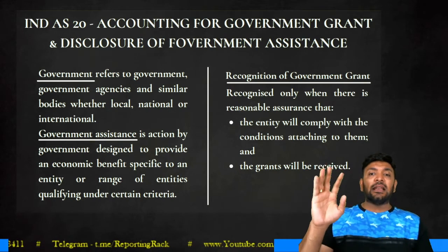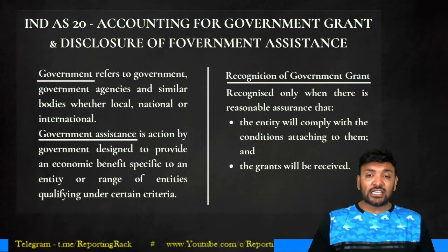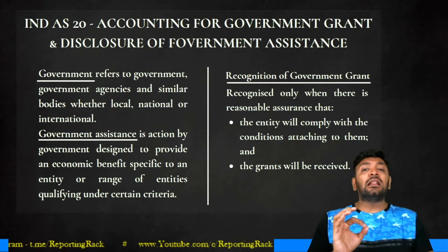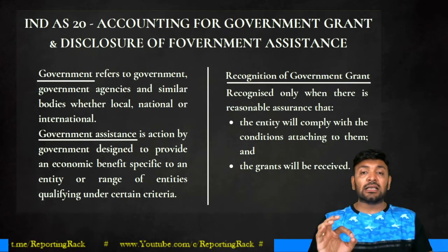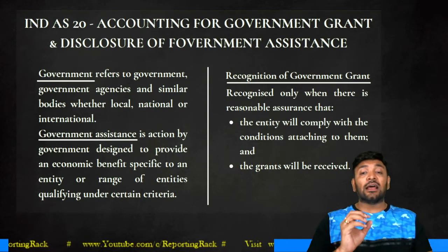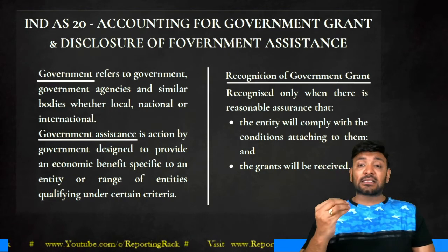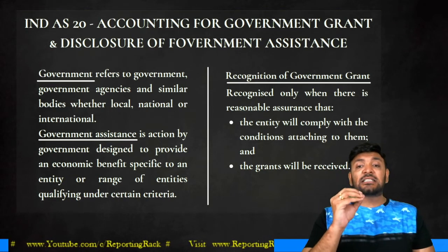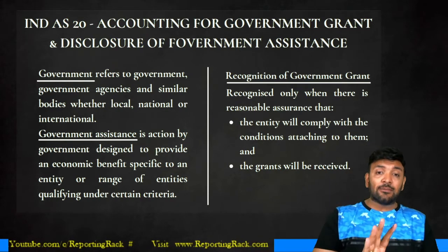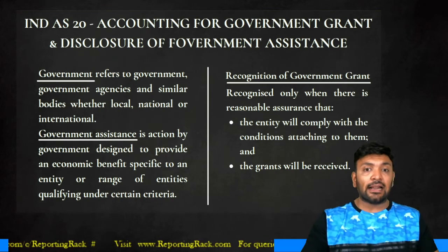For example, the government gives a piece of land as a non-monetary grant with the condition that for the next 10 years, 70% of semi-skilled and unskilled workers must be local people. If it is reasonably certain that the enterprise will satisfy this criteria, then you can recognize the grant.